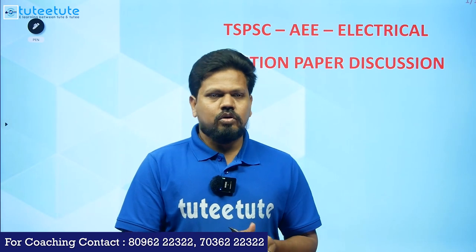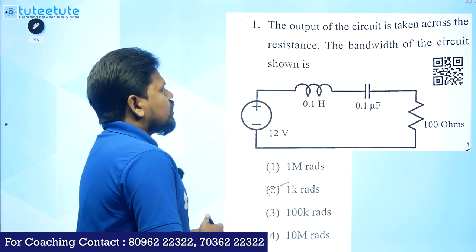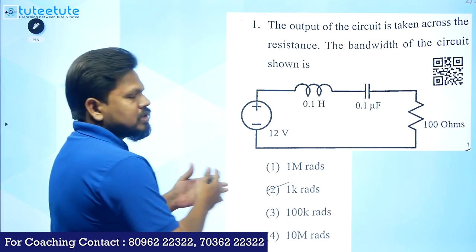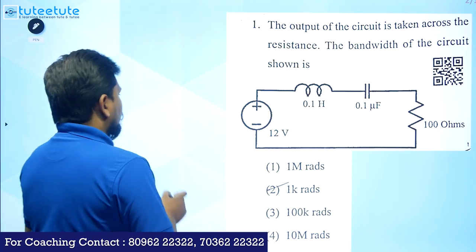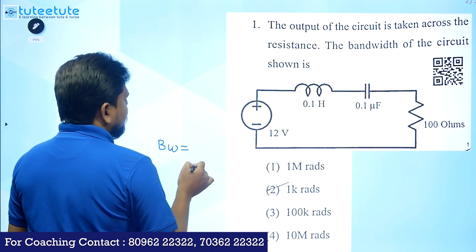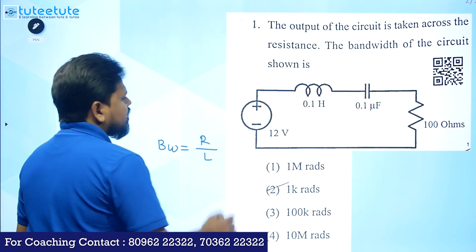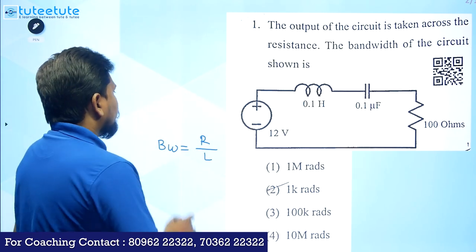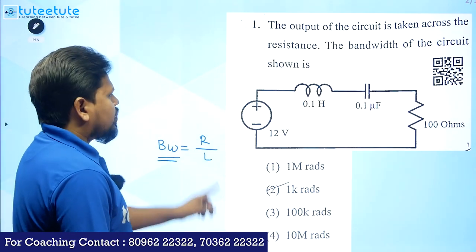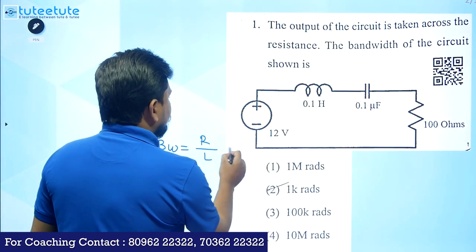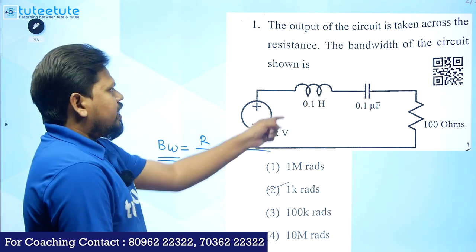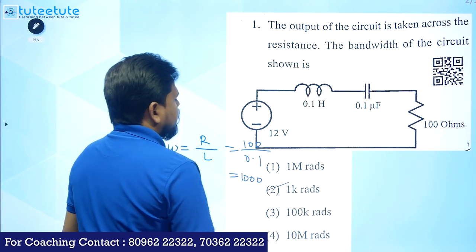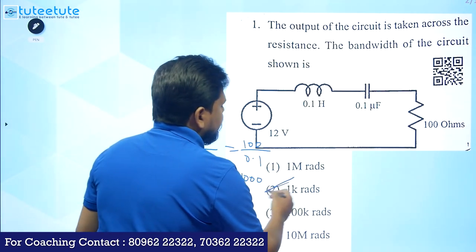First question: the output of the circuit is taken across the resistance — the bandwidth of the circuit shown is? This is a simple question. We have to remember the bandwidth formula directly: for any series RLC circuit, bandwidth equals R divided by L. Resistance value is 100 ohms divided by inductance value 0.1 henry, so we directly get 1000 radians, which is 1 kilo-radian.